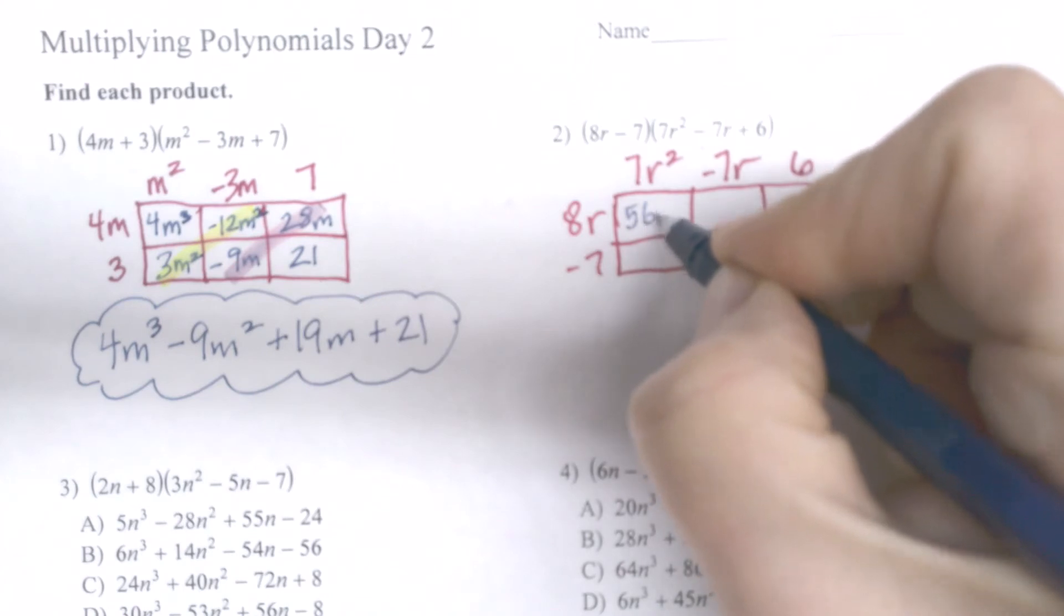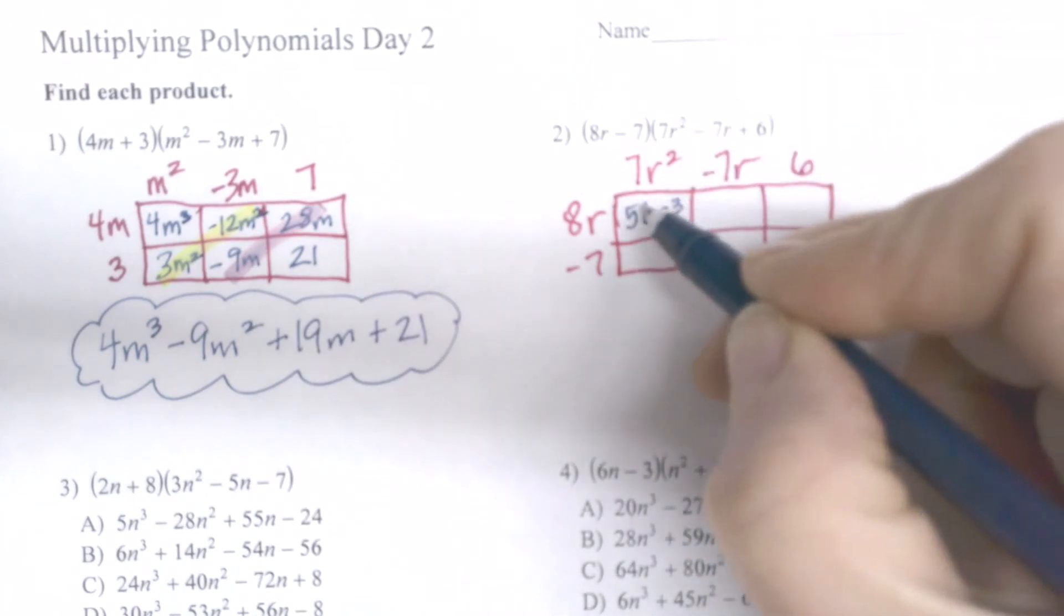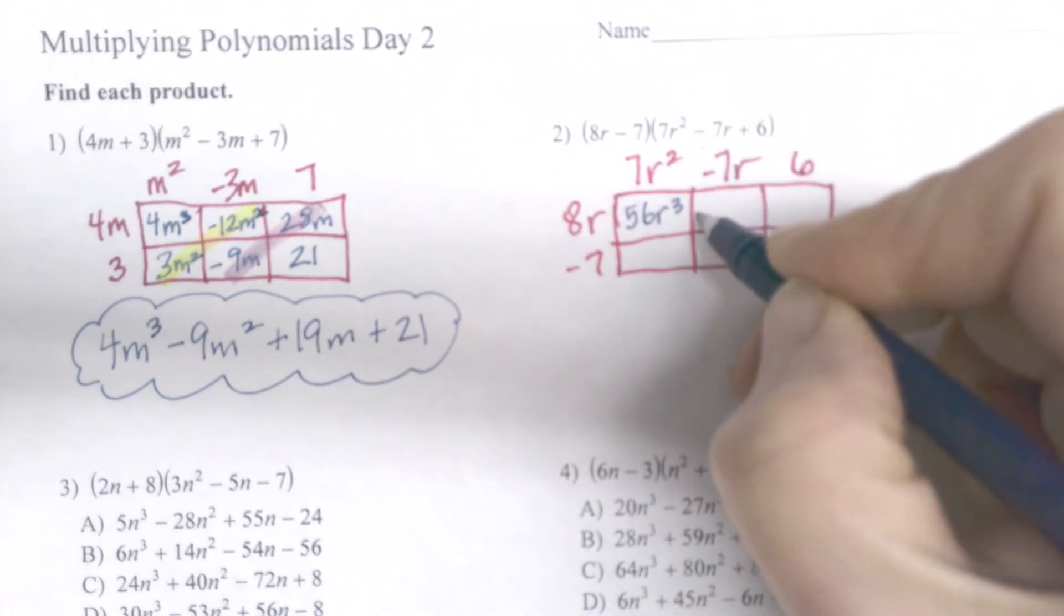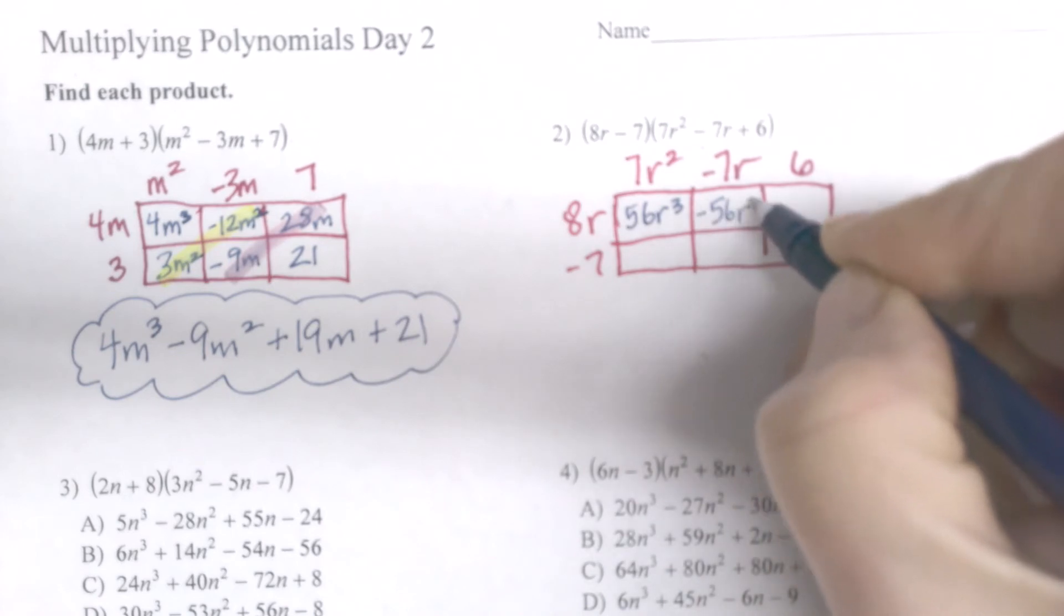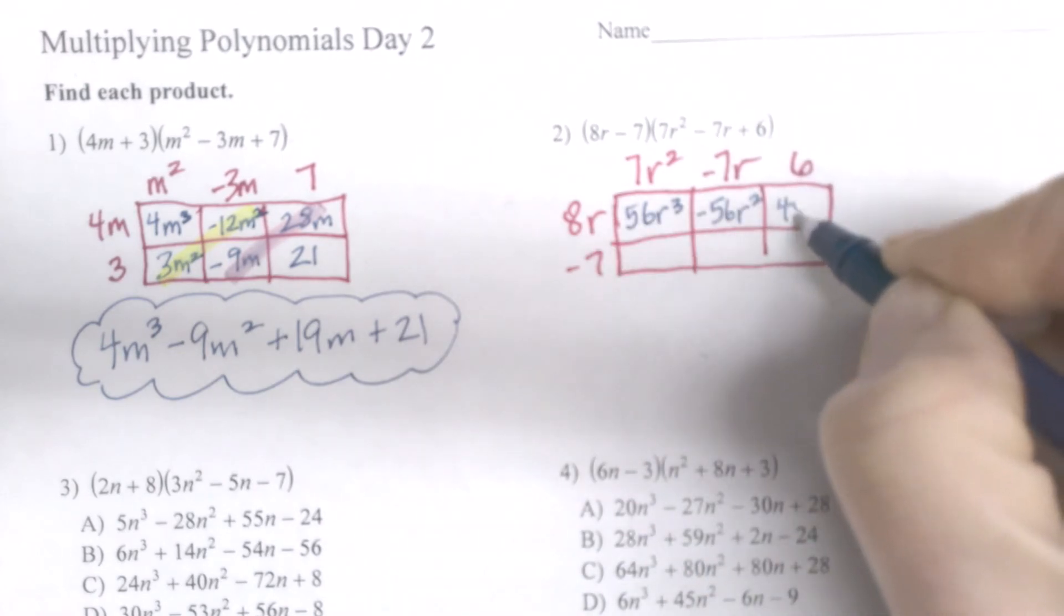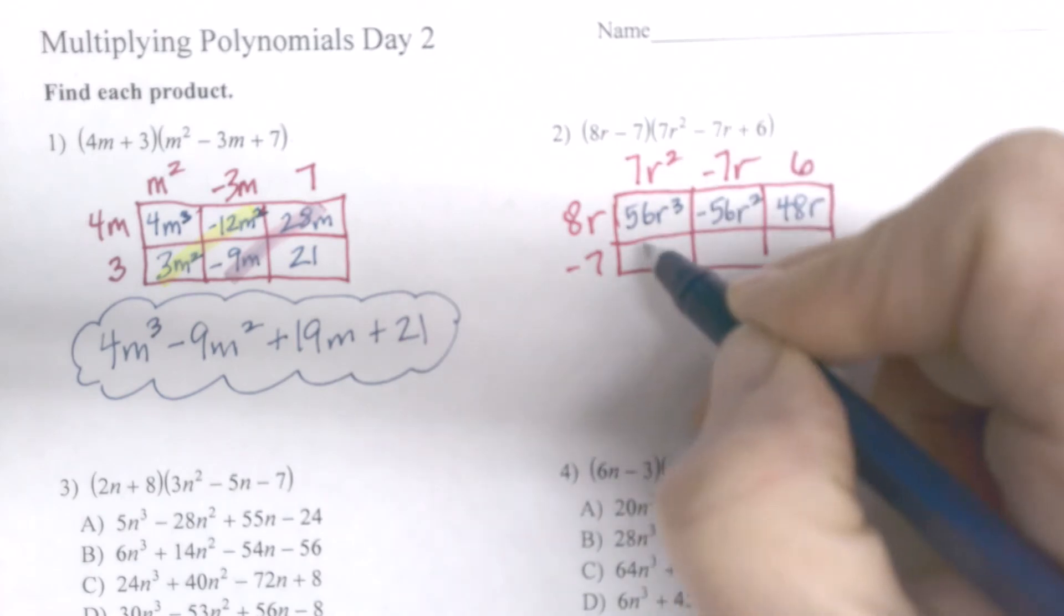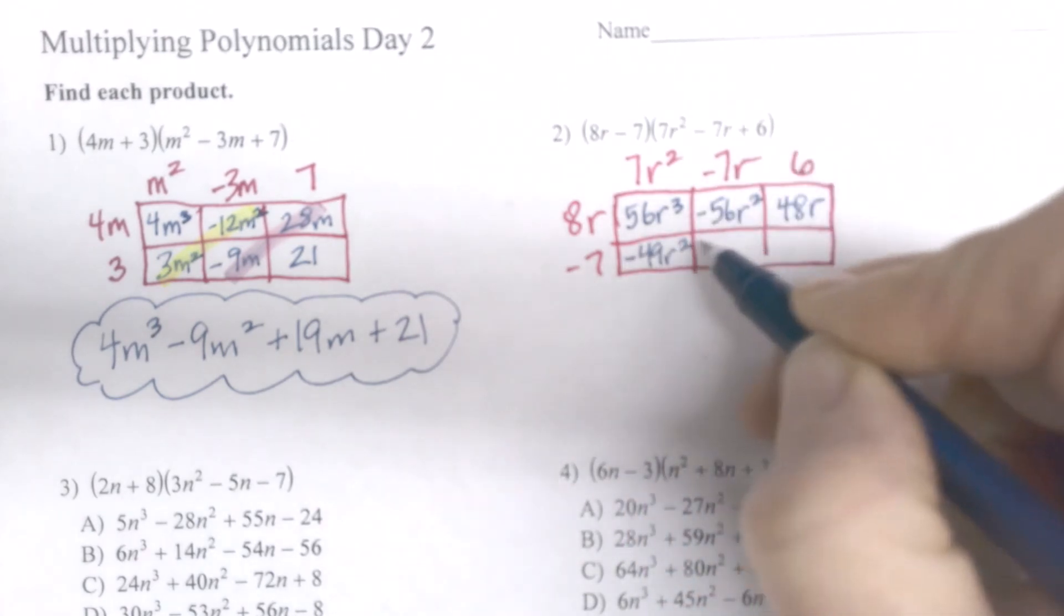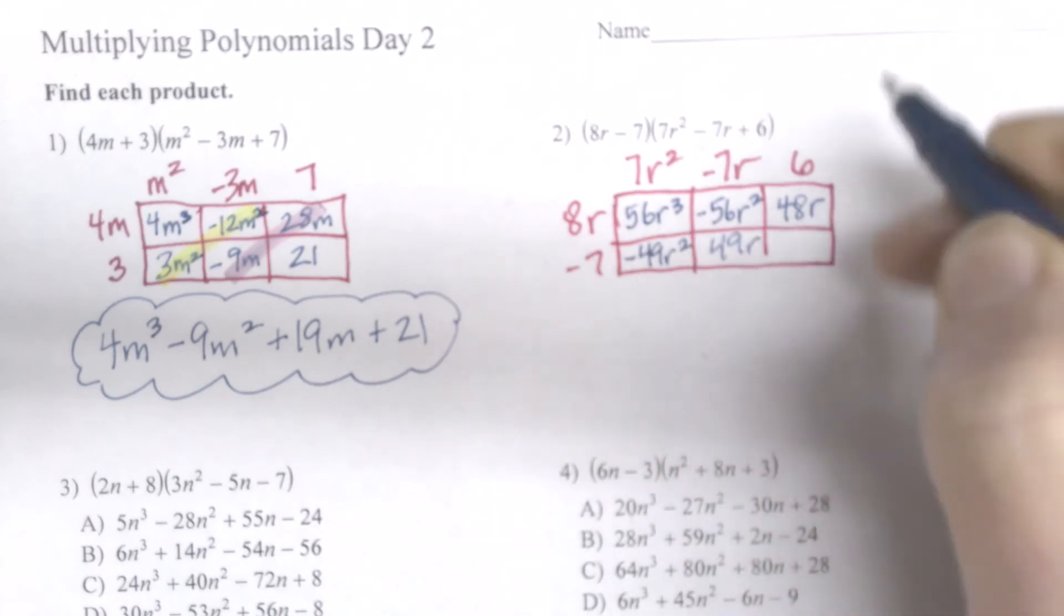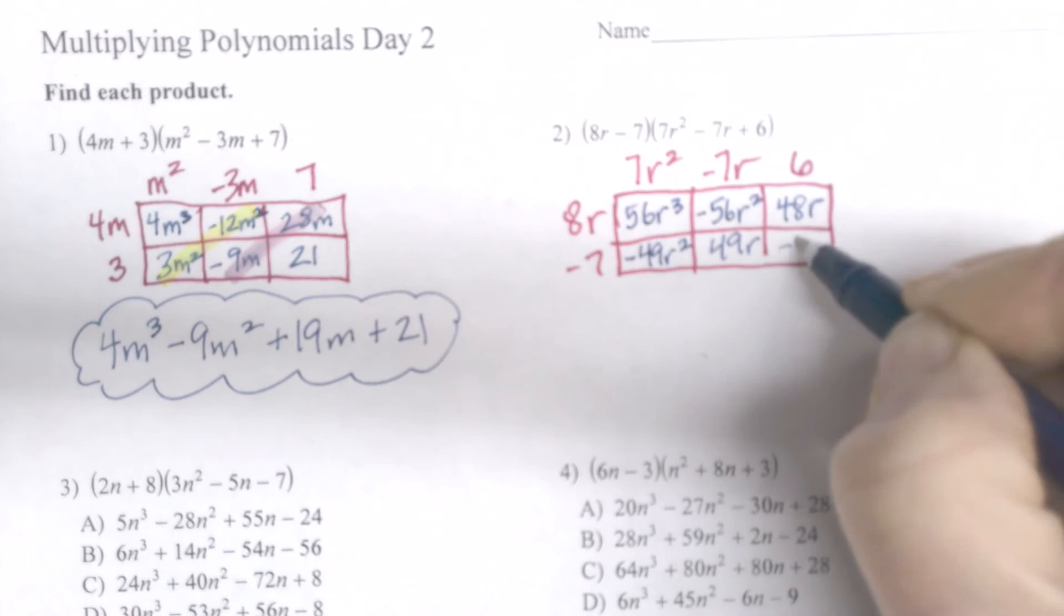56r cubed, minus 56r squared, 48r, minus 49r squared, plus 49r, and minus 42.